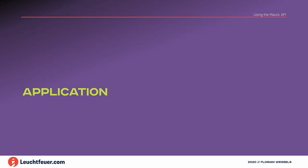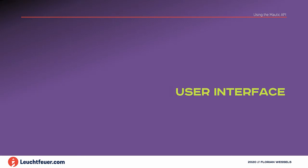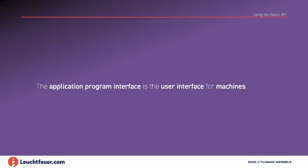API stands for Application Programming Interface. I'll compare it with another interface you already know: the User Interface. Generally, the API is the User Interface for machines. When you click a button, you interact with Mautic — the API calls a URL and Mautic provides data back. That's the same for machines as what you did when you clicked a button. The User Interface is to humans what the API is to machines — the way to interact with Mautic.